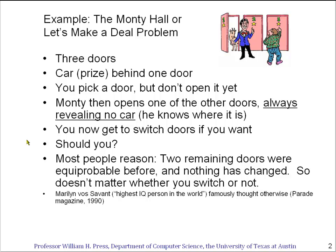She wrote a column explaining that you should always switch, and that the probability of the car was not equiprobable in this game. She was deluged with more than 10,000 letters — this was before email — saying that she had to be wrong, that the logic where it says most people reason was just inescapable.